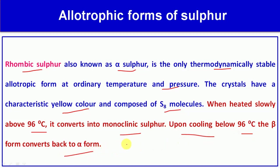From an exam point of view, they will ask: at what temperature does rhombic sulfur convert into monoclinic sulfur? The answer is above 96°C. Below 96°C, monoclinic sulfur (beta form) converts back into rhombic sulfur (alpha form).